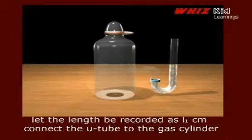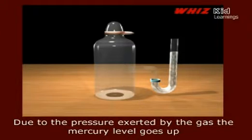Connect the U-tube to the gas cylinder. Due to the pressure exerted by the gas, the mercury level goes up.